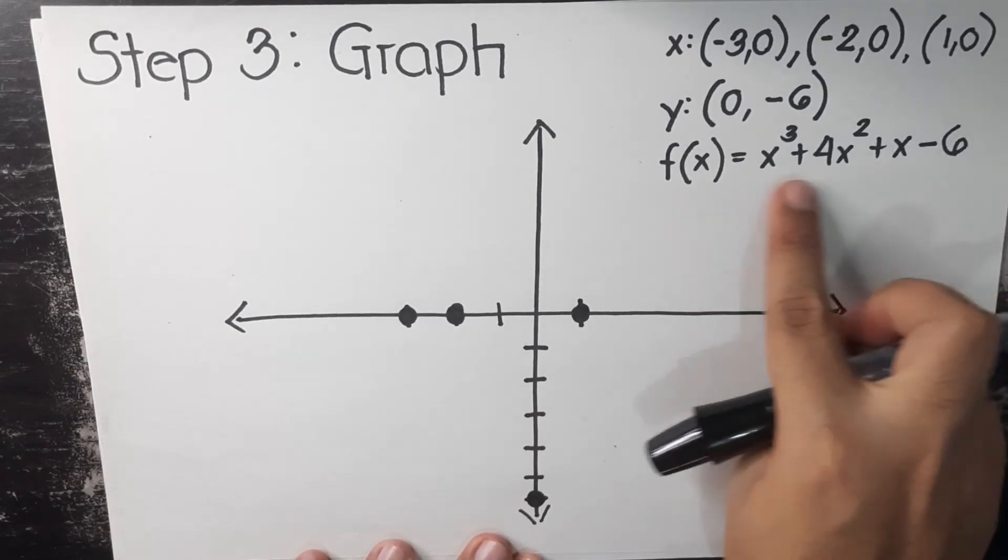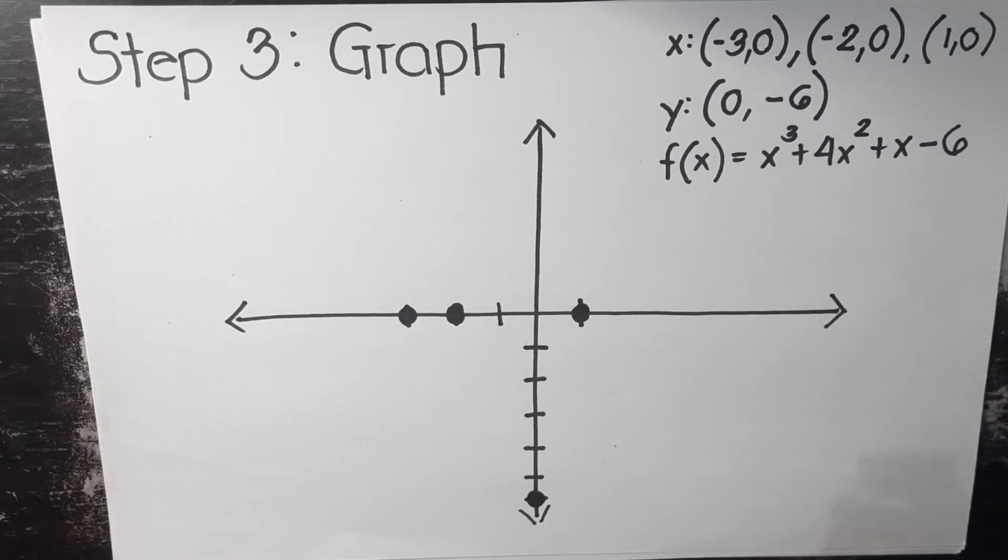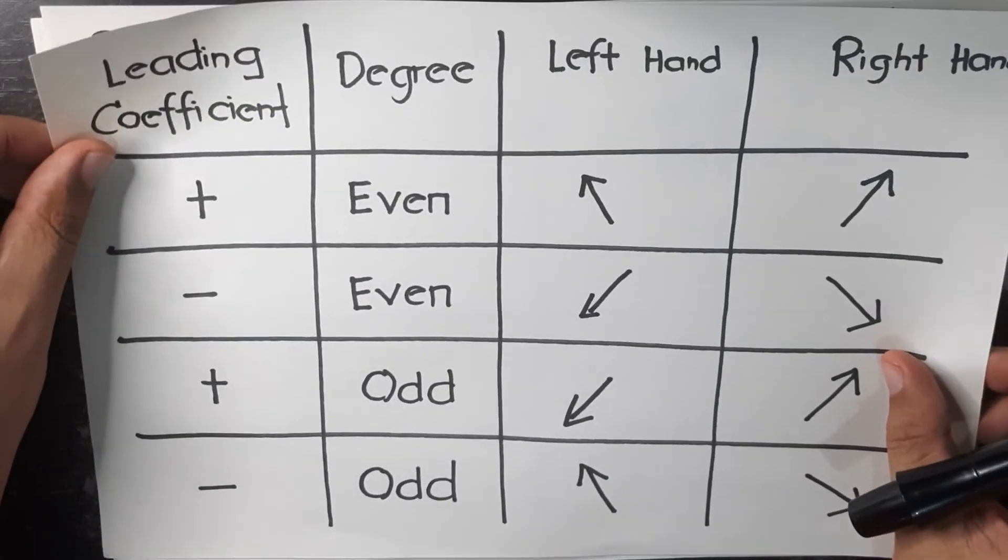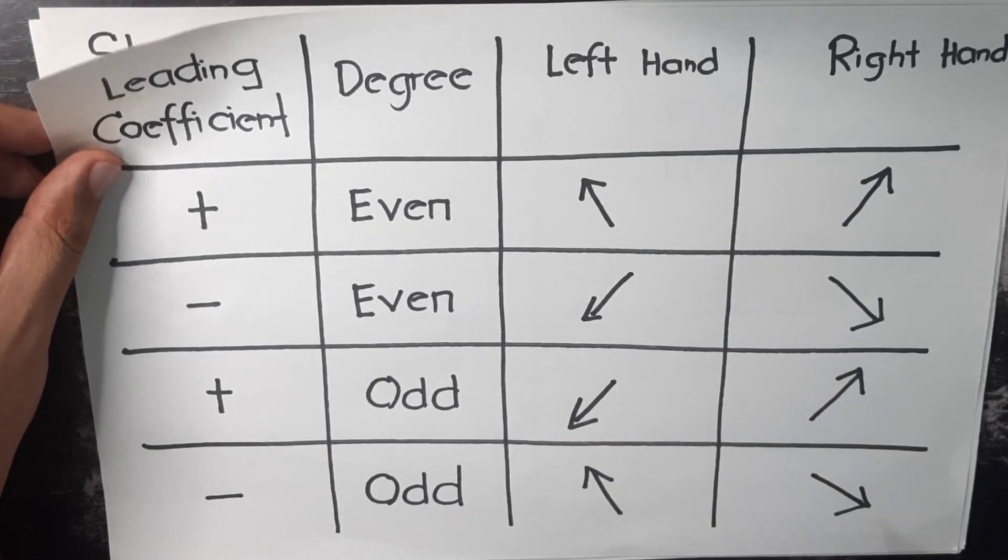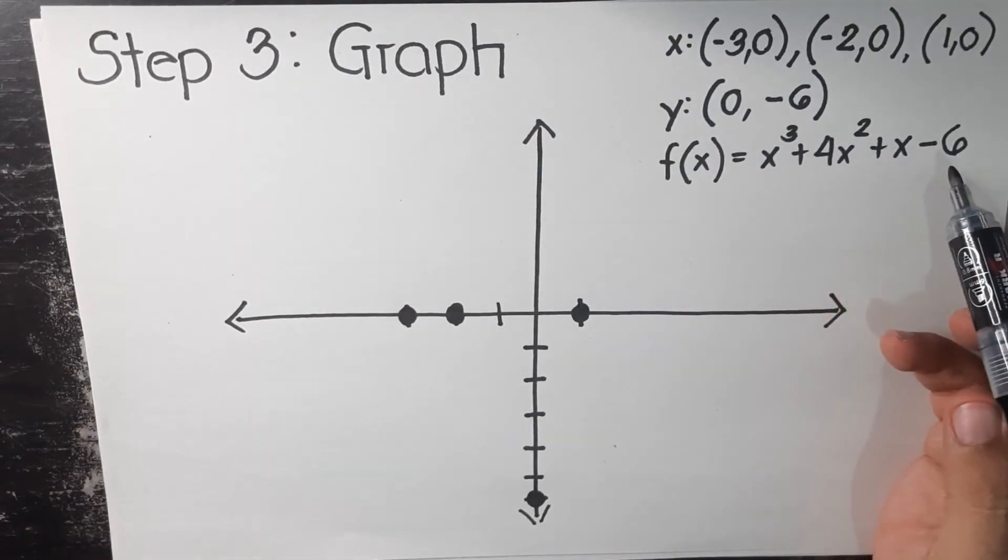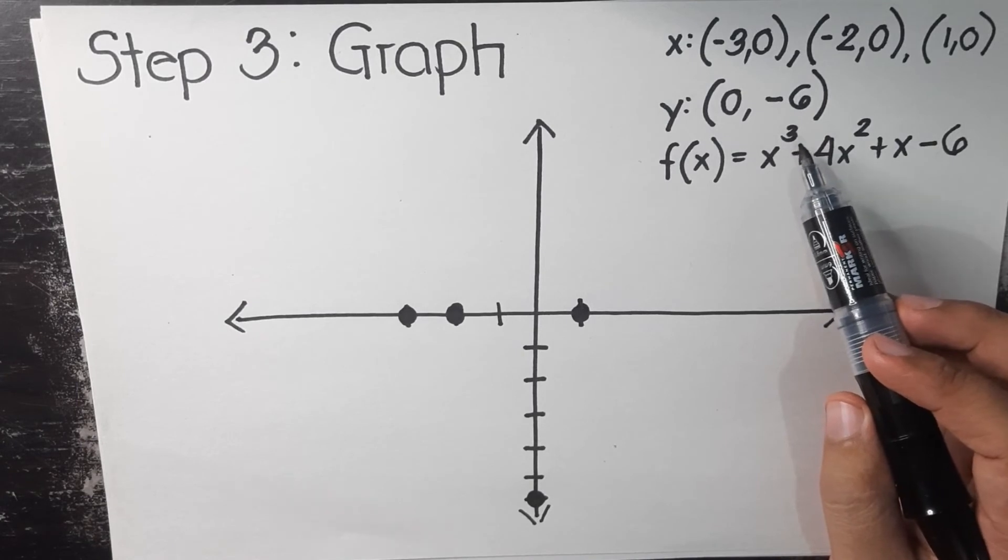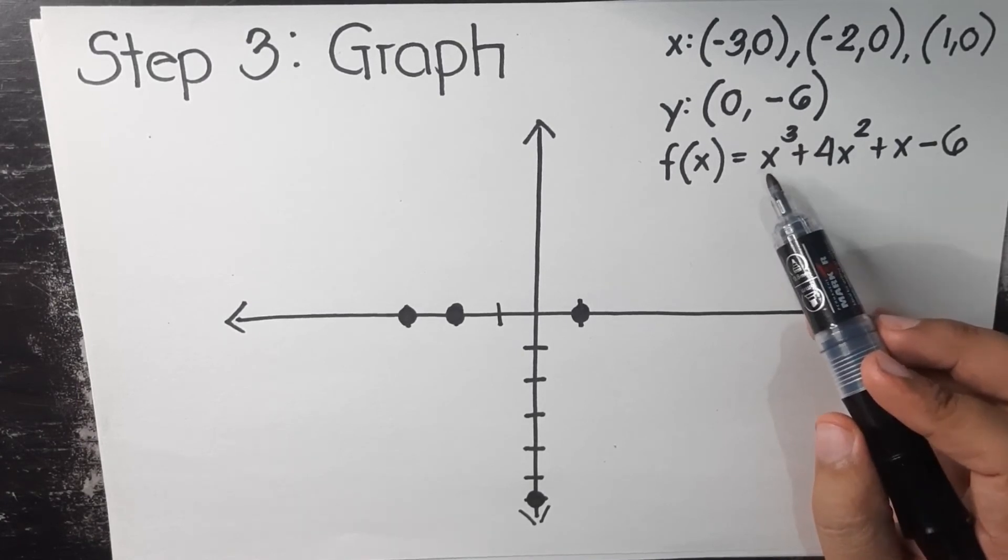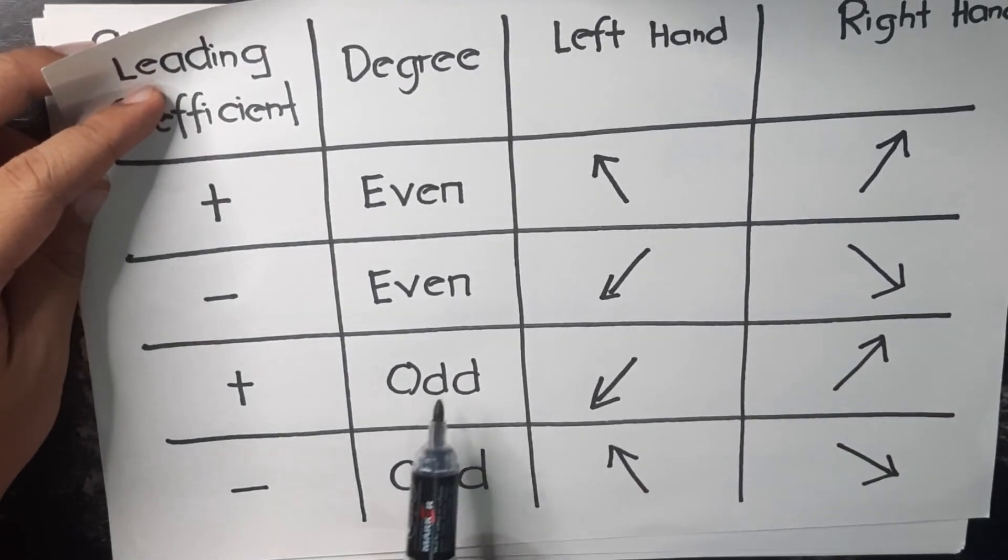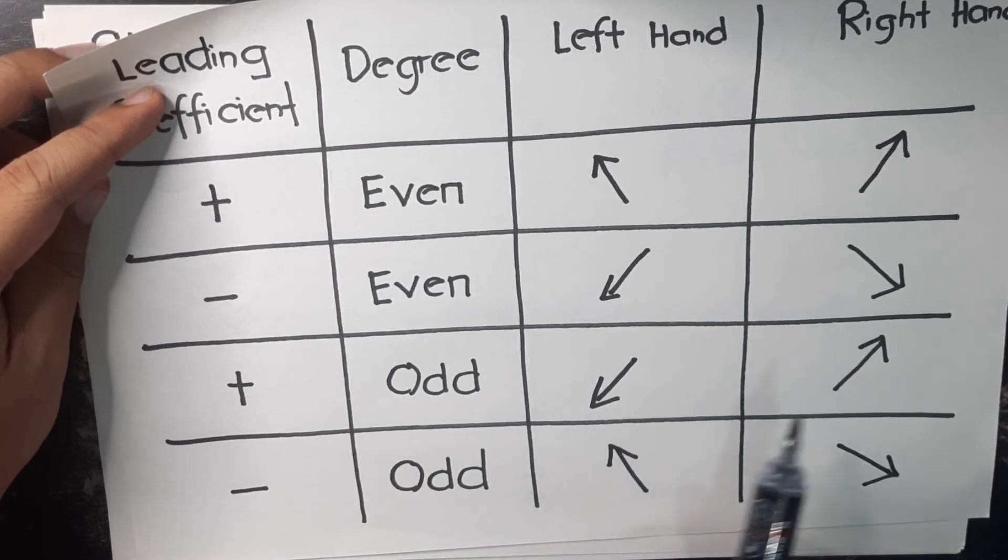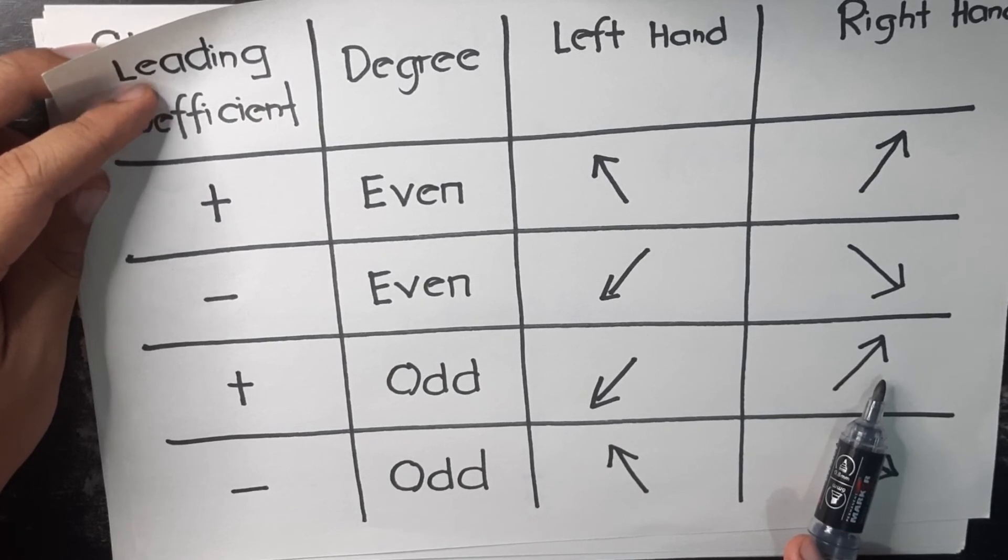Based on the given polynomial, what is the direction of the two hands? This was discussed in my previous video on end behavior, so make sure you have watched that to fully understand what's happening here. As a review, these are the conditions of the end behavior of both arms of the given polynomial. Our degree of polynomial is odd because it's three, and our leading coefficient is positive. Positive, odd. Which means our left hand is going down, our right hand is going up. This will serve as our guide.